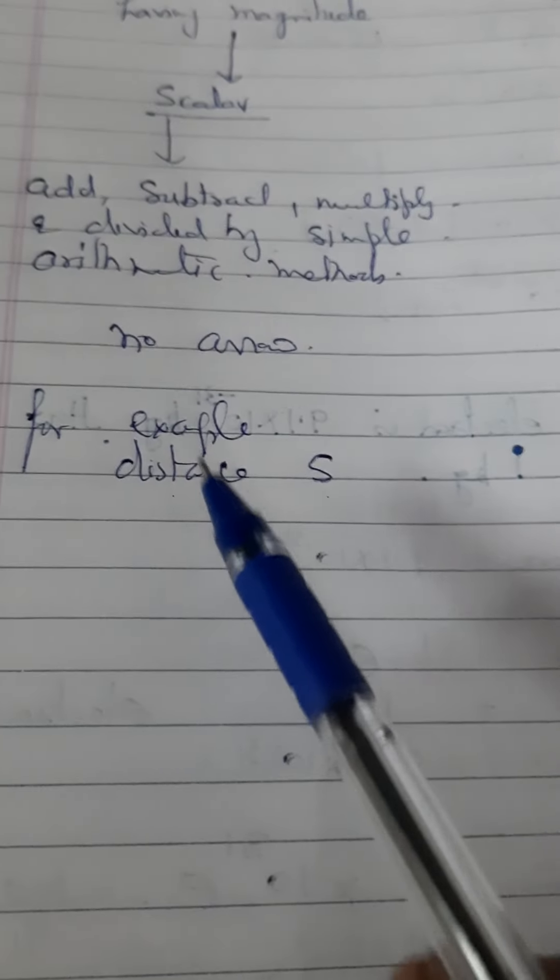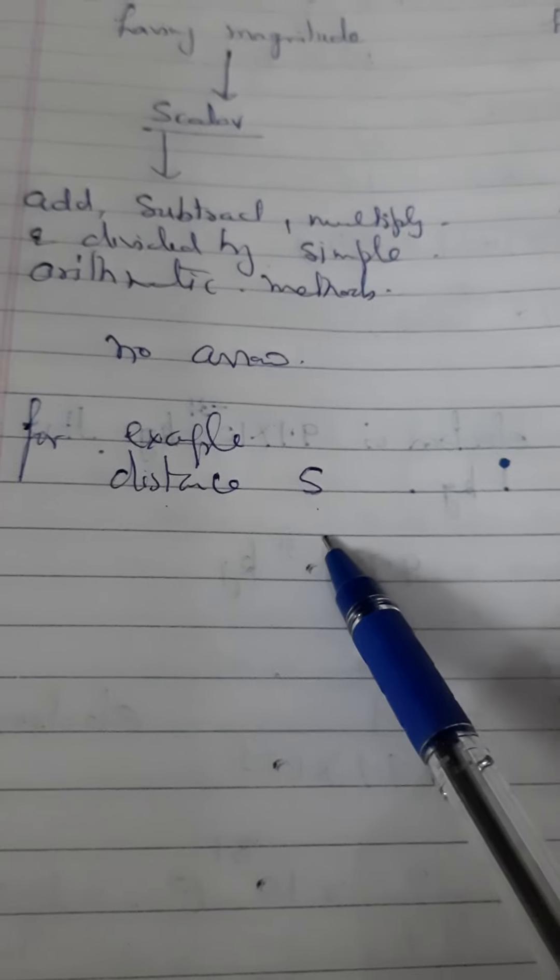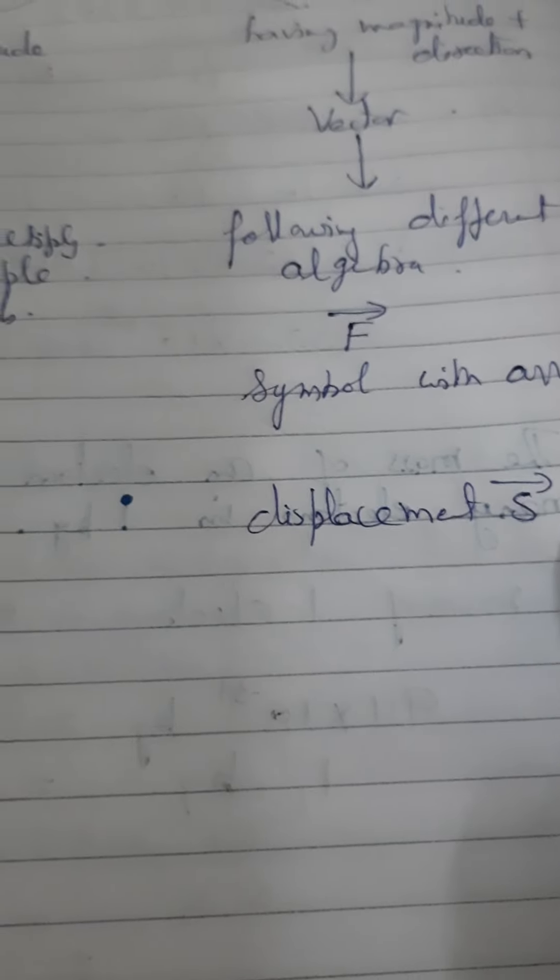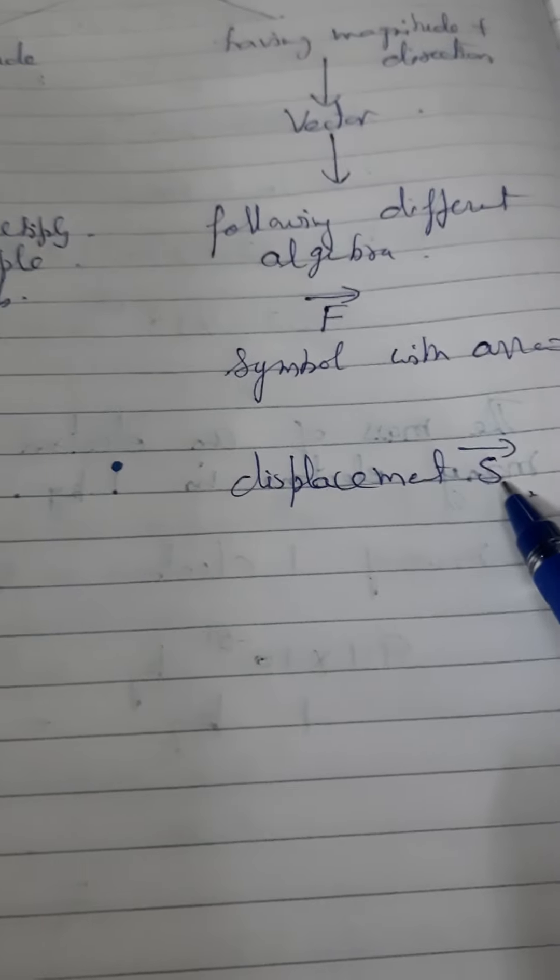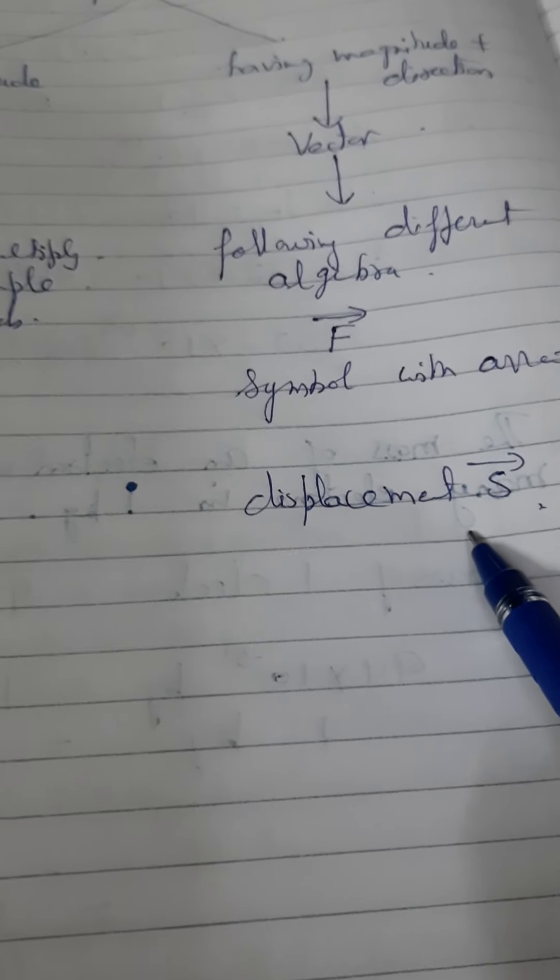If you are representing distance, you will write simple S. But if you put an arrow above S, then it is not distance anymore, it becomes displacement. In this way, scalar quantity is converting to vector quantity by considering direction also.